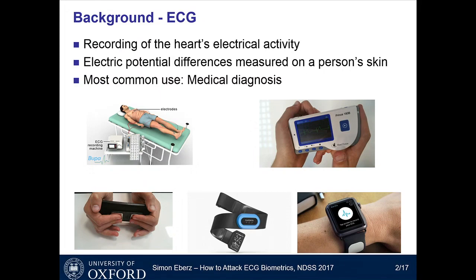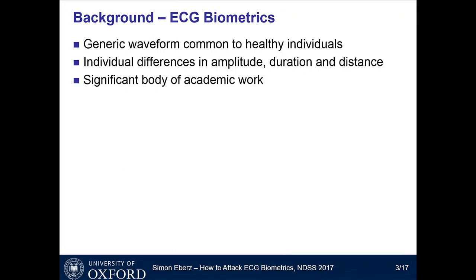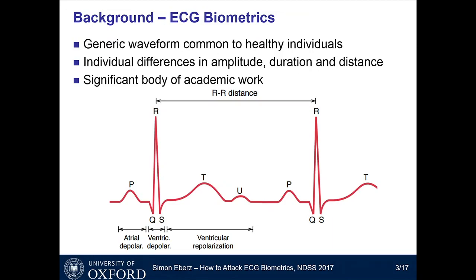There are a lot of devices that use ECG, which has re-sparked the discussion about using ECG as a biometric. The generic ECG waveform is the same for all healthy individuals. ECG is split into individual waves, which are given letters to identify them. Aside from this generic waveform pattern, there are individual differences which make ECG a viable biometric — largely around the amplitude of individual waves and their duration and distance from each other. There is a very significant body of work; put ECG biometrics in Google Scholar and you will get more than just a few results.